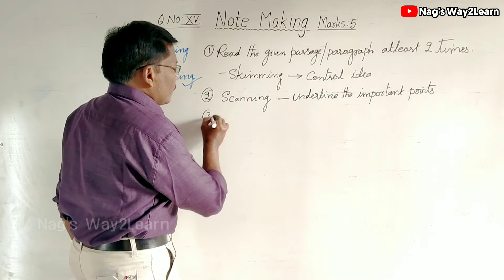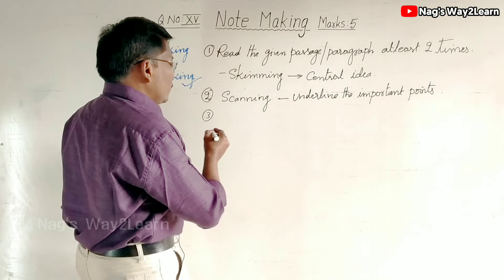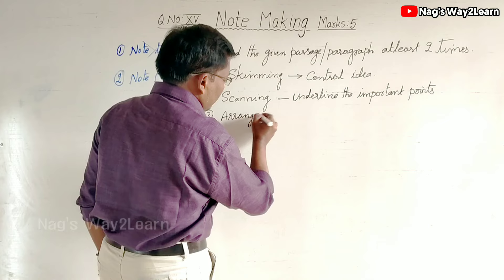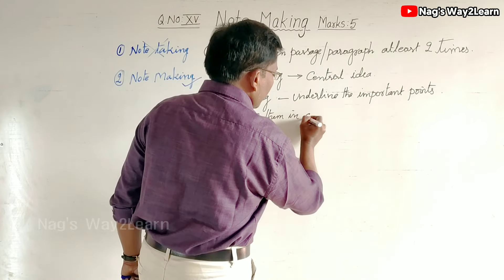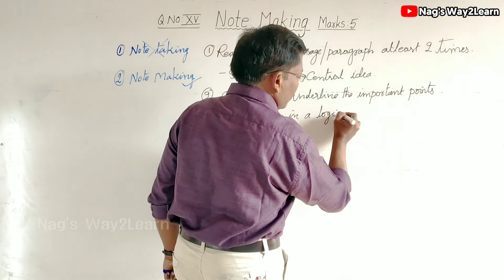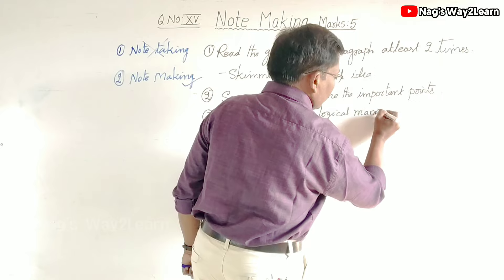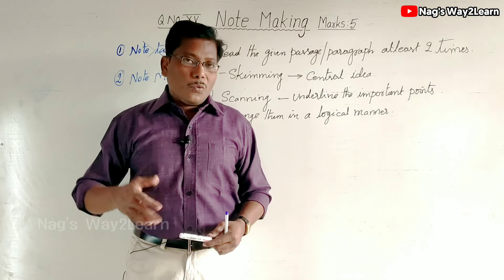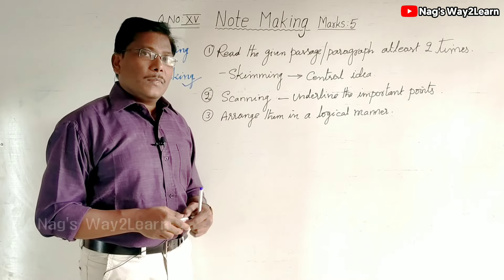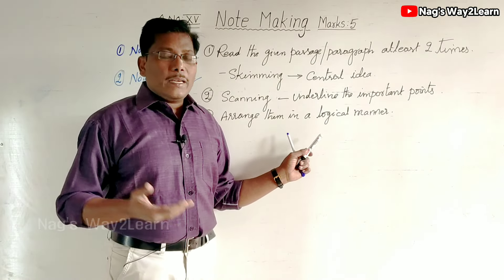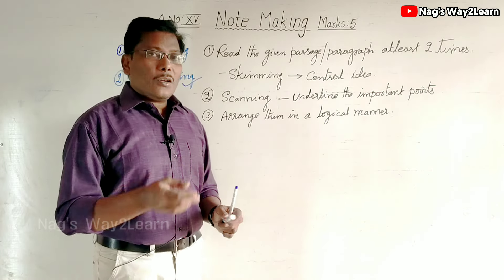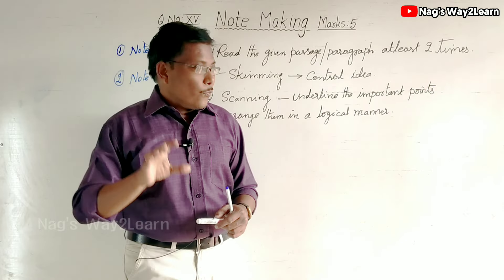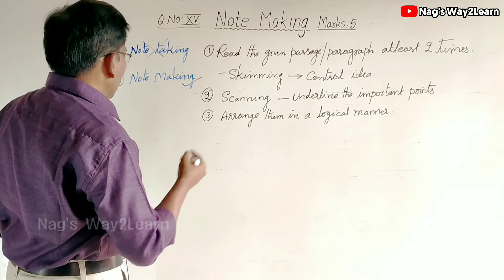After identifying the important points or lines, you have to write them in a logical manner. You have already identified the important lines, so now you have to arrange them in a logical manner. This is easier said than done, because arranging the points in a logical manner is not easy. But to do that effectively, we have to follow certain rules while writing the points in a logical manner.